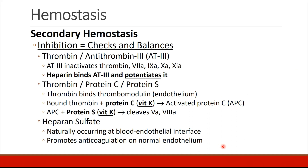Other substances in the checks and balances include thrombin being inhibited by antithrombin-3, which inactivates thrombin as well as several other coagulation factors. Heparin binds to antithrombin-3 and potentiates it, making it work even more strongly against thrombin and these other factors. There's also protein C, a vitamin K-dependent factor, which attaches to bound thrombin to create activated protein C. Activated protein C binds to protein S, another vitamin K-dependent factor, and this complex will cleave factors 5a and 8a to inhibit coagulation. There's also heparin sulfate, a natural substance which promotes anticoagulation on the normal endothelium.